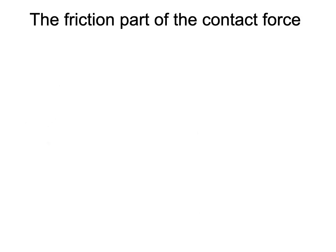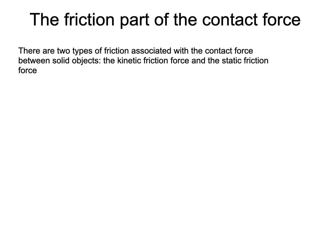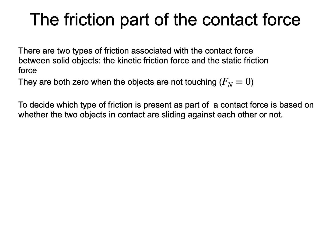The next examples will involve contact forces. It is time to investigate how to quantify these forces. There are two types of friction forces: the kinetic friction force and the static friction force. The normal part of a contact force must not be zero in order to have friction forces of either type — in other words, the two objects need to be touching. The difference between the two types of friction forces comes from whether the objects are sliding against each other or not. If there is sliding, the kinetic force is present. If there is no sliding, the static friction force might be present.